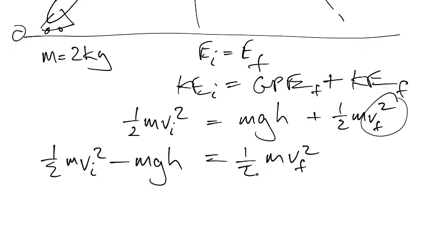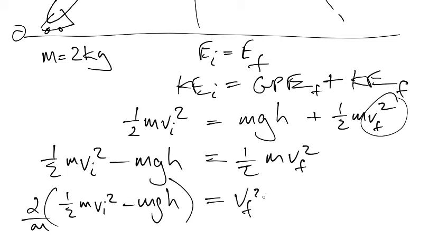Okay, so now what I'm going to do is I'm going to multiply the whole equation by 2 and divide by m. So I'm going to go 2 times one half m v_i squared minus mgh, and divide by m. There you go. That's going to equal the final velocity squared.